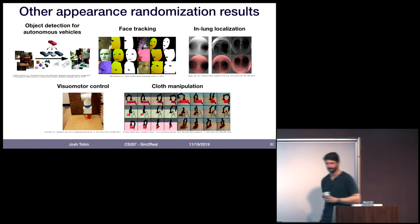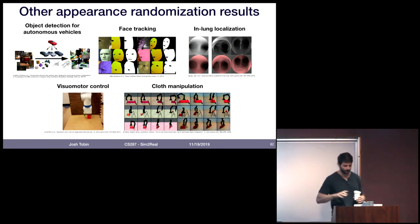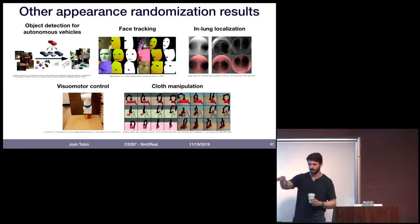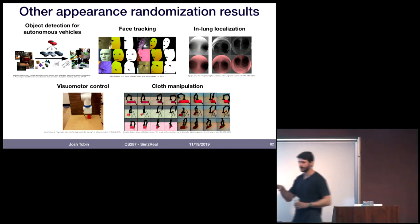A few other highlights of results using domain randomization and its extensions: people have extended it to estimating the full 6-DOF pose of objects — position and orientation — not just XYZ location. It's been applied to objects with really challenging textures, like a paper that used domain randomization to train a perception model for grasping fish out of a bucket, which is challenging because fish are shiny and reflective and hard to model. People have also extended it to localizing an entire corpus of objects rather than a single network per object, to object detection for autonomous vehicles, face tracking using a simulated face model, localizing a robot within a map, and end-to-end control policies that take images directly and output robot commands.